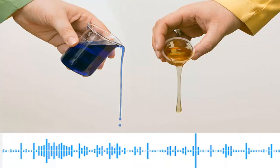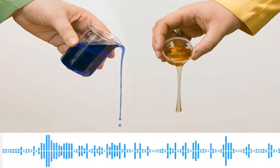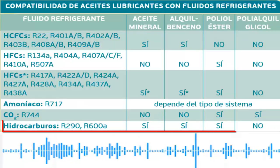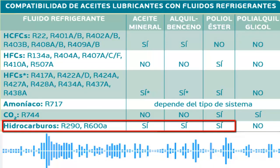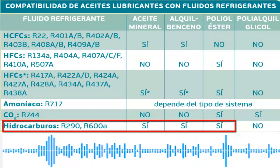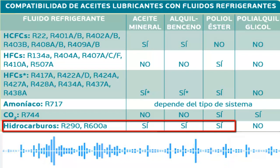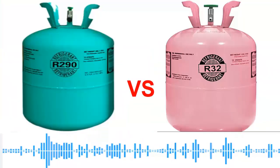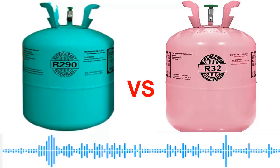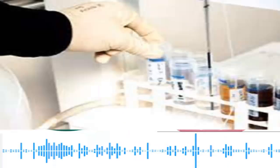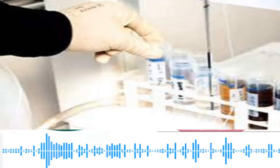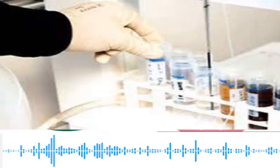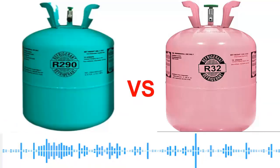In terms of lubrication, the R290 is compatible with practically all oils, while the R32 is compatible only with PoE oil. In terms of oil compatibility, the R290 is much greater in flexibility than the R32 with its respective oils.